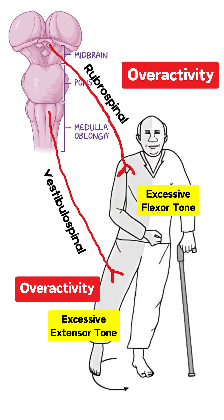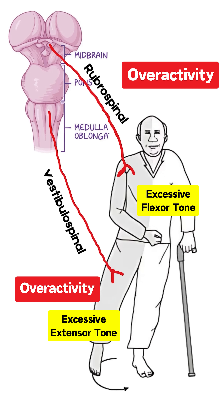Because of the increased activity in the rubrospinal pathway, we have increased flexor tone in the hemiplegic upper limb. And because of the increased activity in the vestibulospinal pathway, we have increased extensor tone in the hemiplegic lower limb.